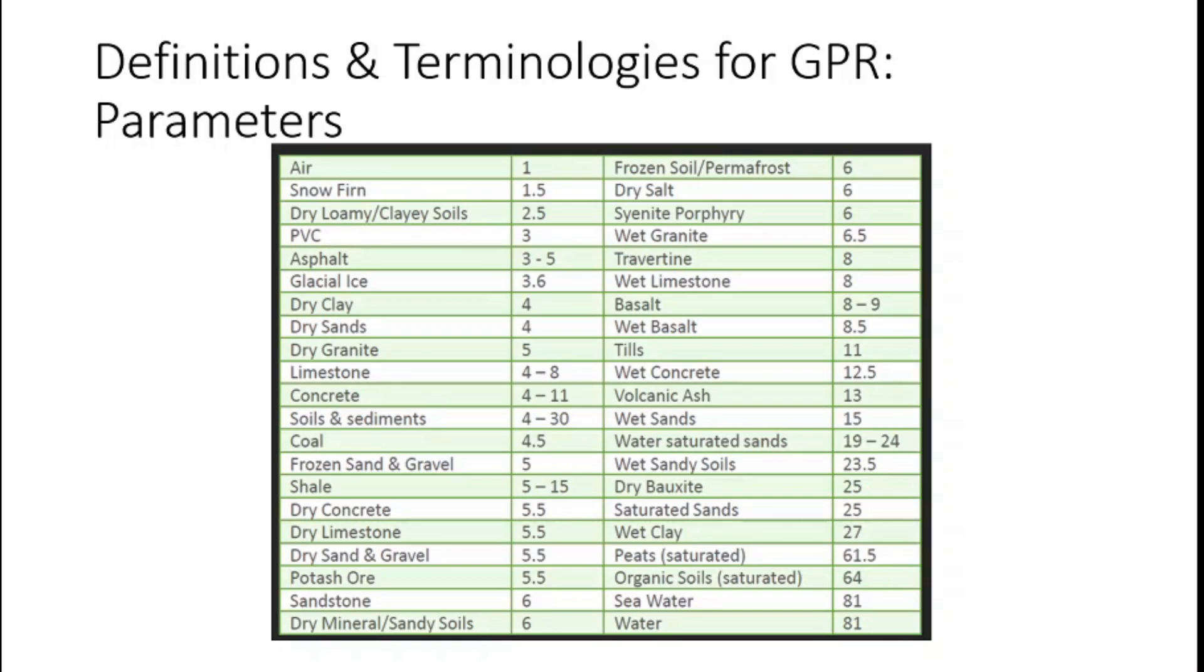Common materials of investigation that are listed in this table. It goes around like 1 to 81. Basically all the materials have the range of relative dielectric permittivity between 1 to 81, and that all depends on the amount of saturation of water within the materials. For example, we have dry clay, it can be four, but if clay gets some sort of saturation then it goes on increasing. The conductivity will increase, it can go up to like 20 up to 30 depends on the amount of water present in the vicinity of the material.